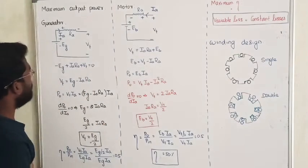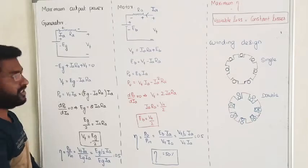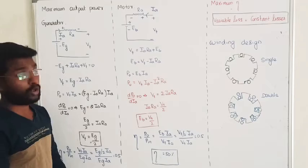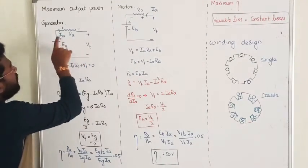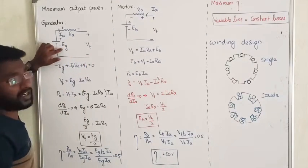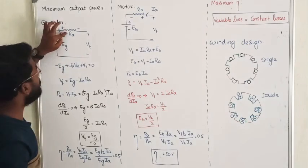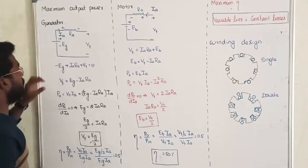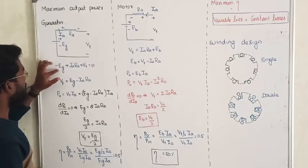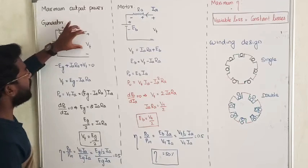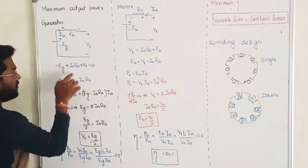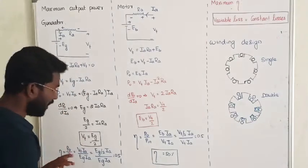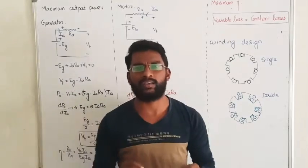In a generator, this is the approximate equivalent circuit of the DC generator. Here I am considering this is the approximate equivalent circuit of the DC motor. In a DC generator, first we are generating the voltage and then we are delivering the current through the armature resistance. This is my terminal voltage. Applying KVL for this loop equation: minus Eg plus Ia*Ra plus terminal voltage equals zero. From this, terminal voltage Vt equals Eg minus Ia*Ra.